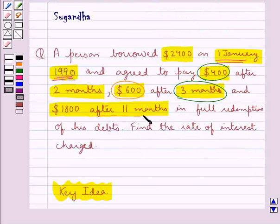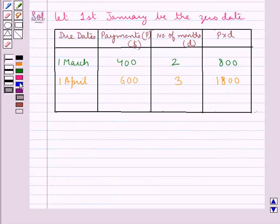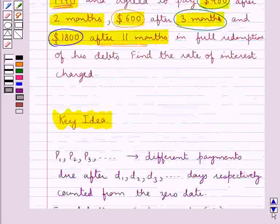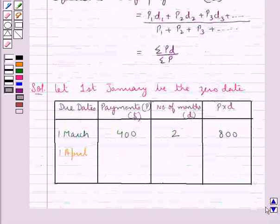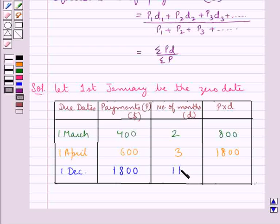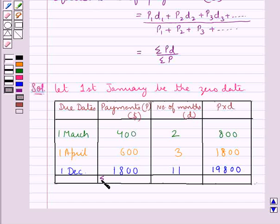The next due date is after 11 months of the date of borrow. For 1 January, 11 months would be 1 December, and the payment to be made is $1,800. So small d is 11, and P multiplied by D is $1,800 multiplied by 11, which equals $19,800.